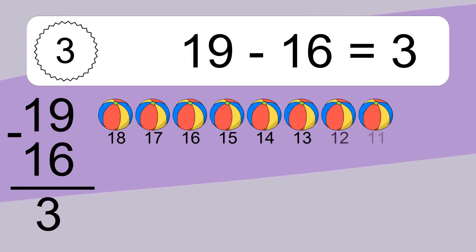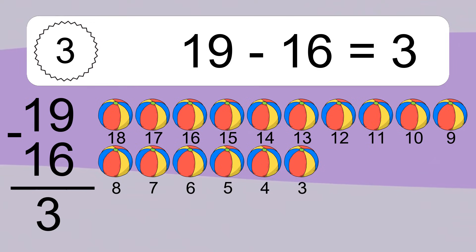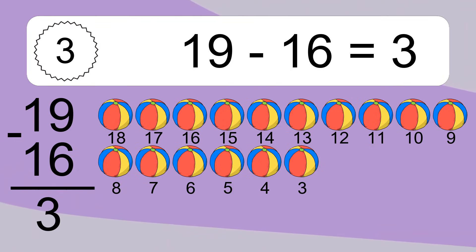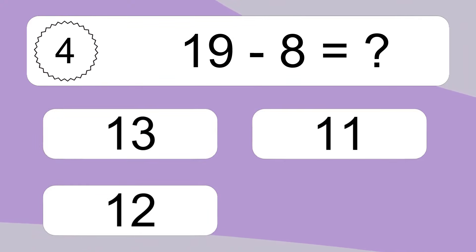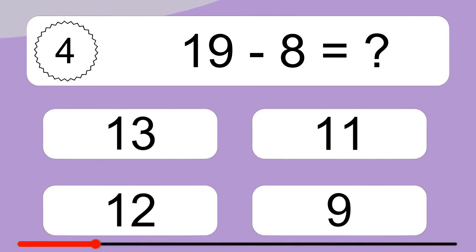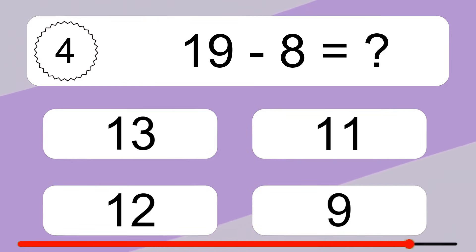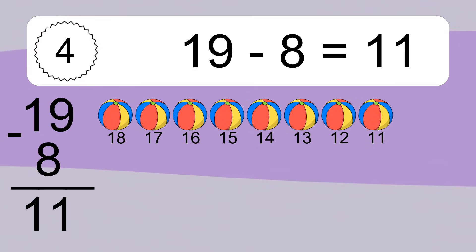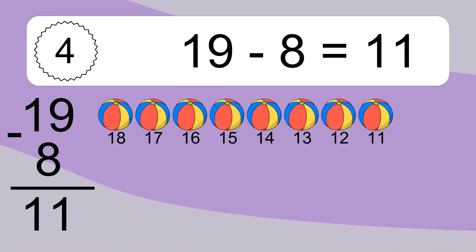19 minus 16 equals 3. Let's count it: 18, 17, 16, 15, 14, 13, 12, 11, 10, 9, 8, 7, 6, 5, 4, 3. 19 minus 8 equals what? 19 minus 8 equals 11. Let's count it: 18, 17, 16, 15, 14, 13, 12, 11.